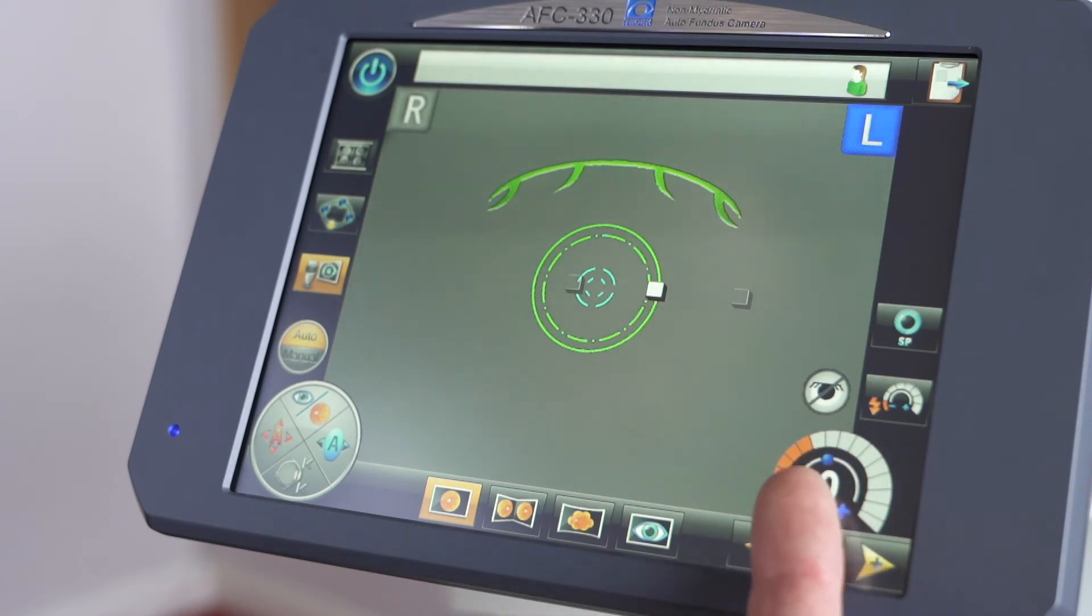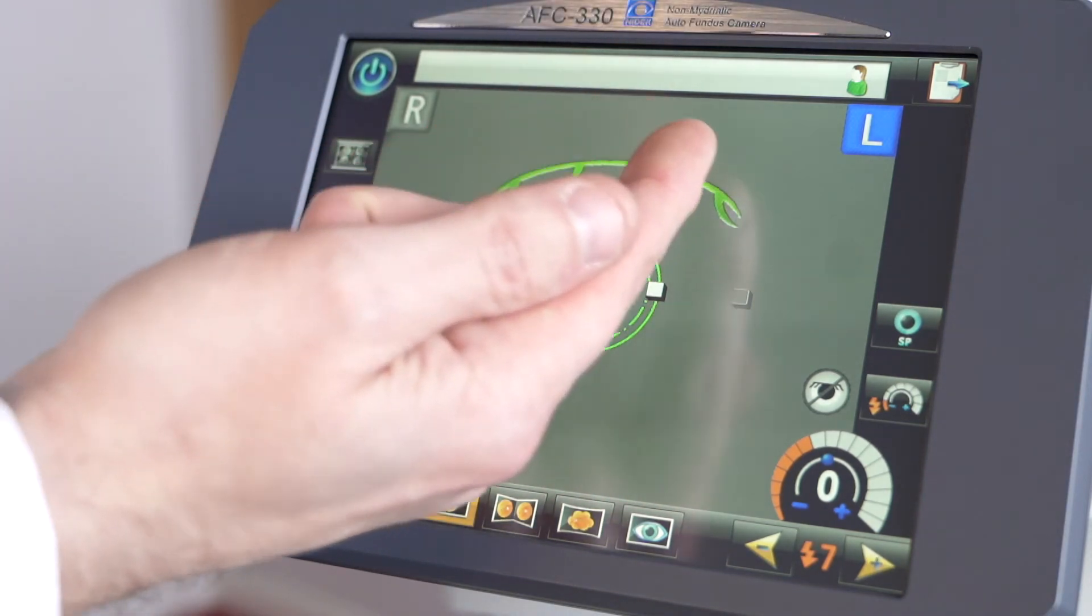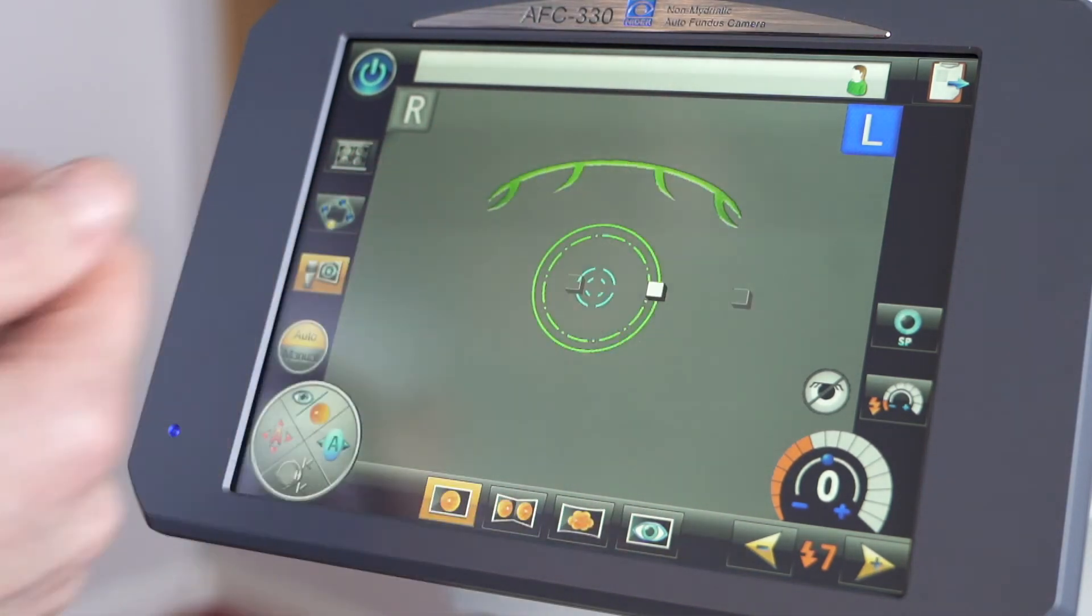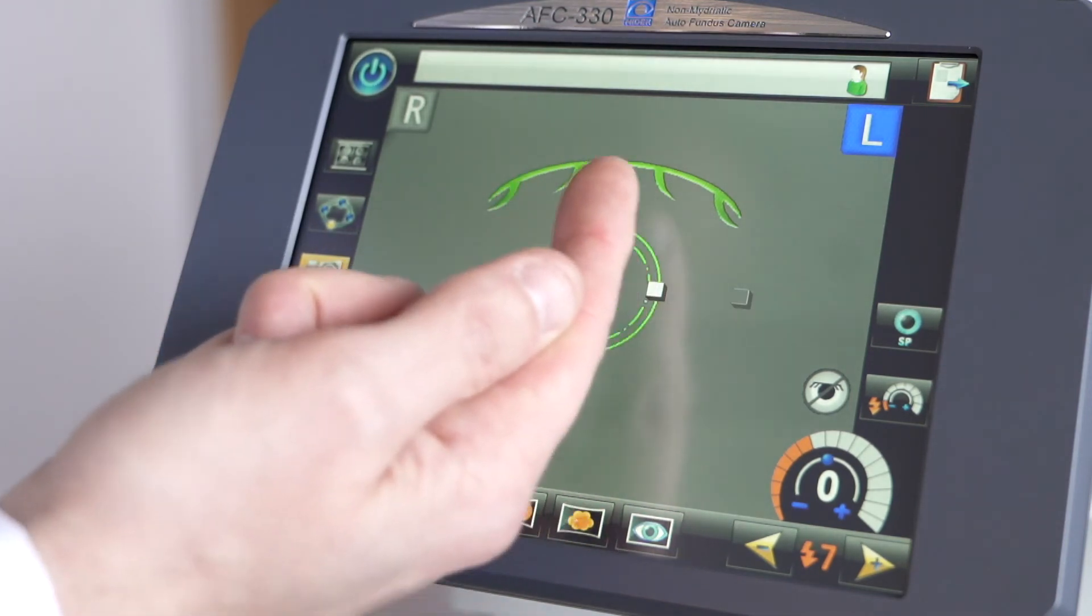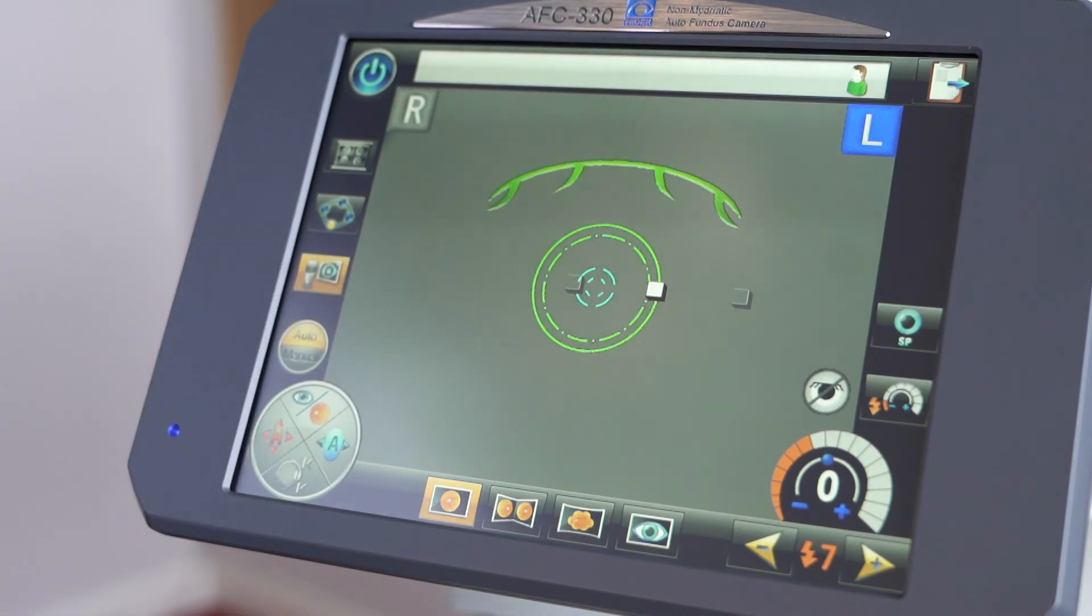Here we have an indication of the focus power needed to actually take the photo. On the screen itself, this is an indication of the eyelids. And then we have two circles to give an indication of the pupil sizes.